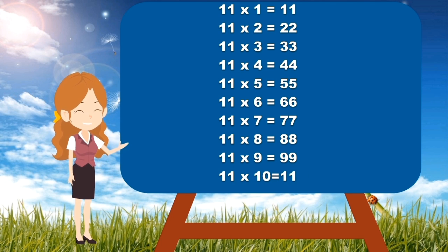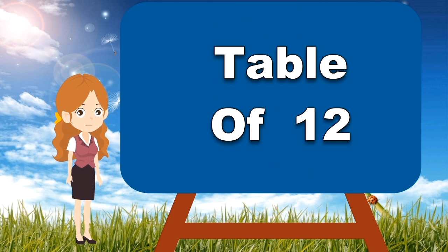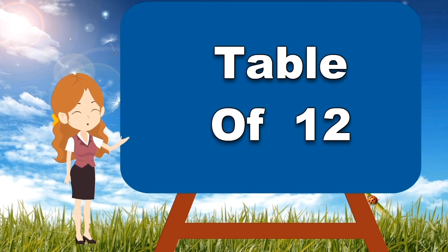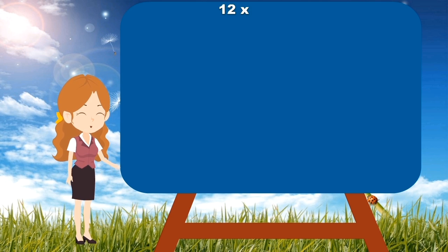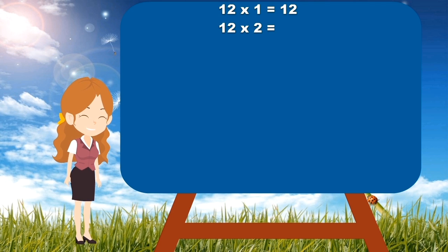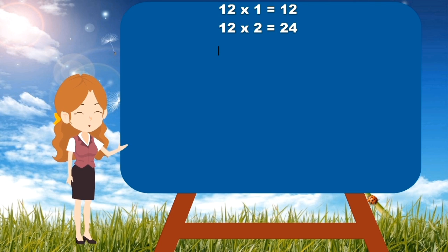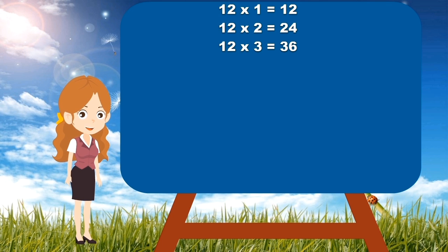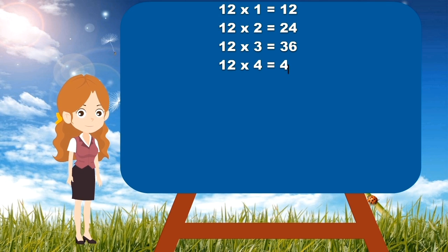Now children, table of 12. Let's start. 12 times 1 is 12. 12 times 2 is 24. 12 times 3 is 36. 12 times 4 is 48.